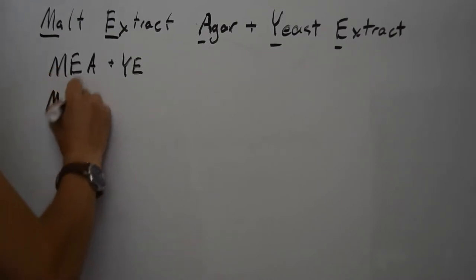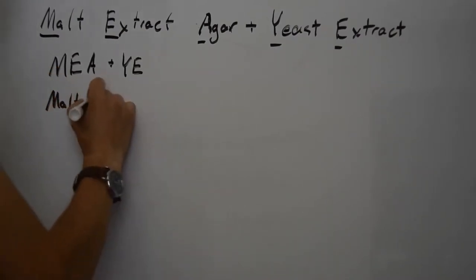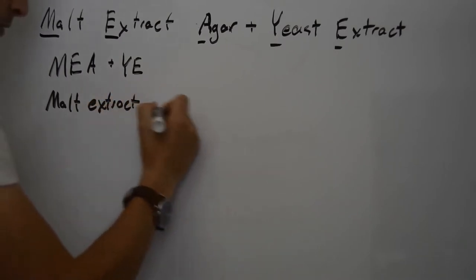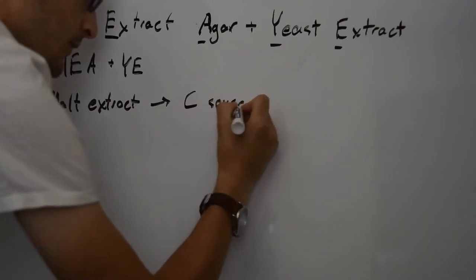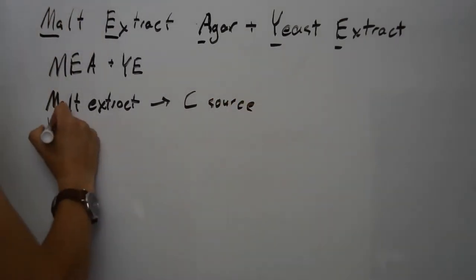Malt extract is the first ingredient, derived from the germinated seeds of barley and is the product used as the base for most beer. It is also a carbon source providing sugars.